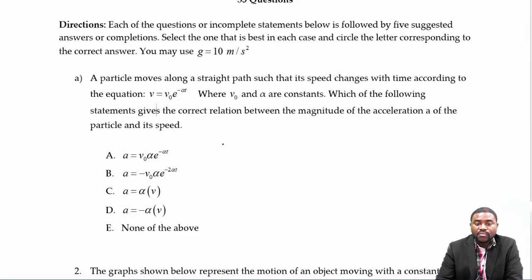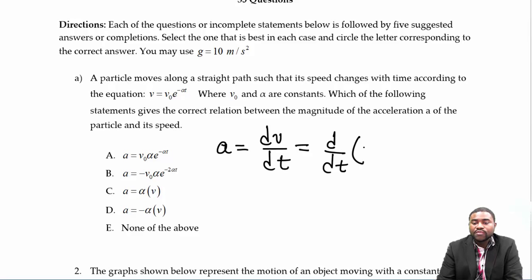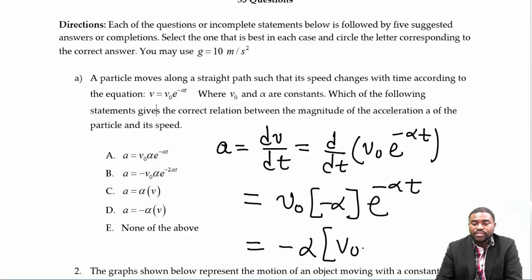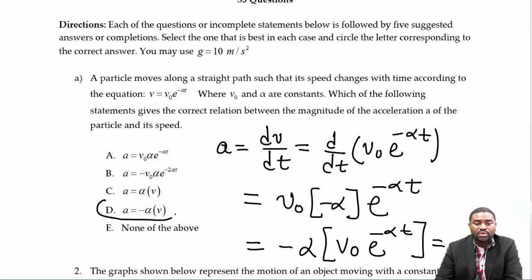We know that by definition the instantaneous acceleration a is defined as dv over dt, which is equal to d/dt of v-naught e^(-αt), and this equals v-naught times negative alpha e^(-αt). This is the same as negative alpha times v-naught e^(-αt), which is just negative alpha v. So our answer is D.